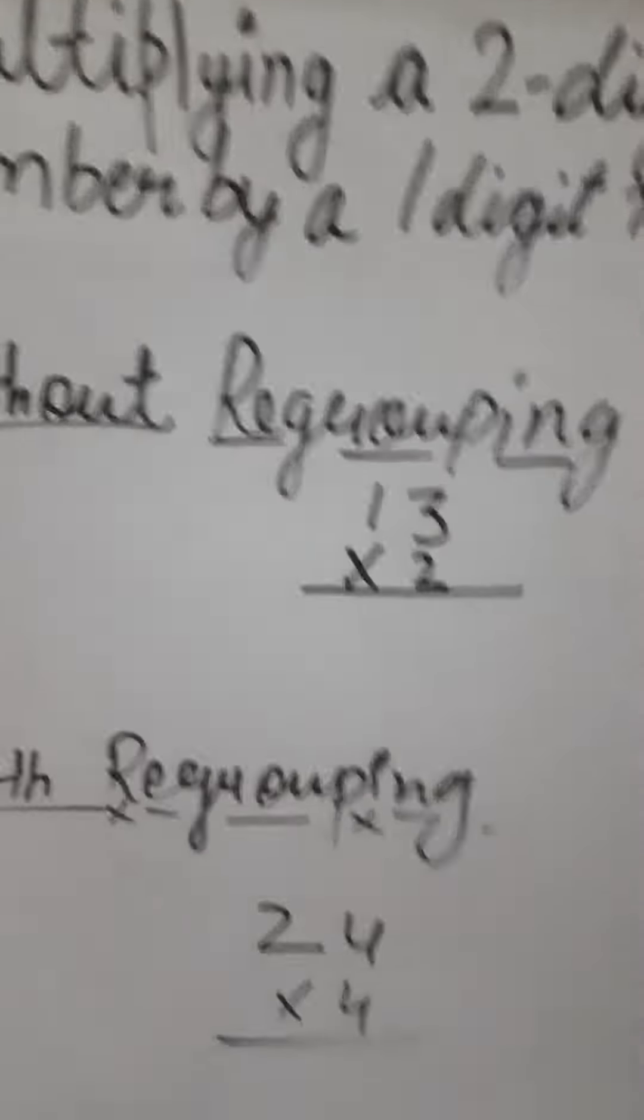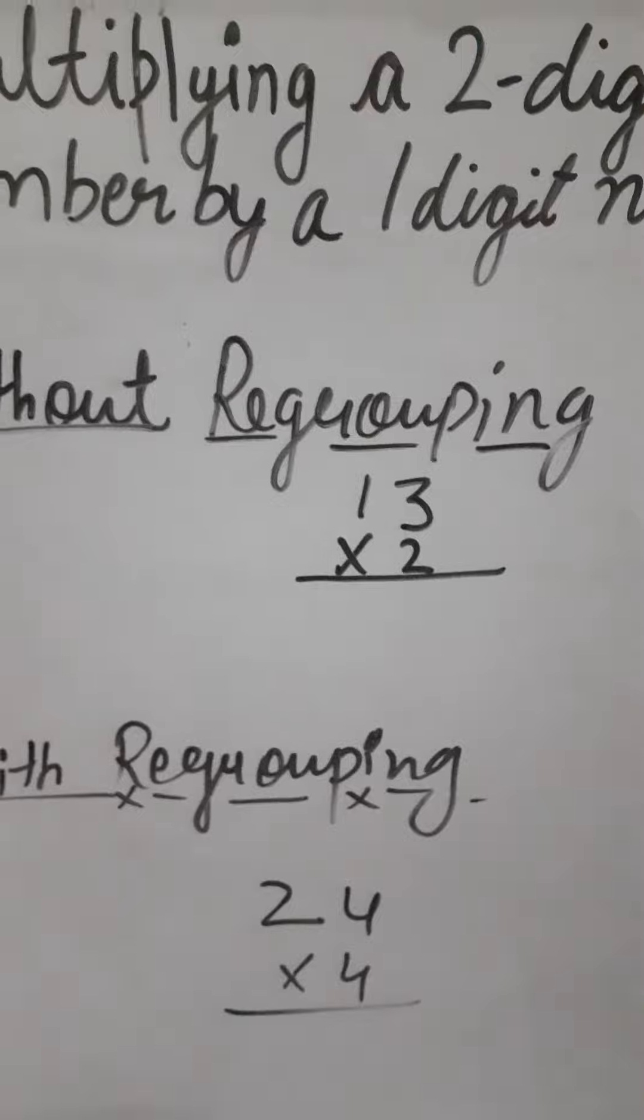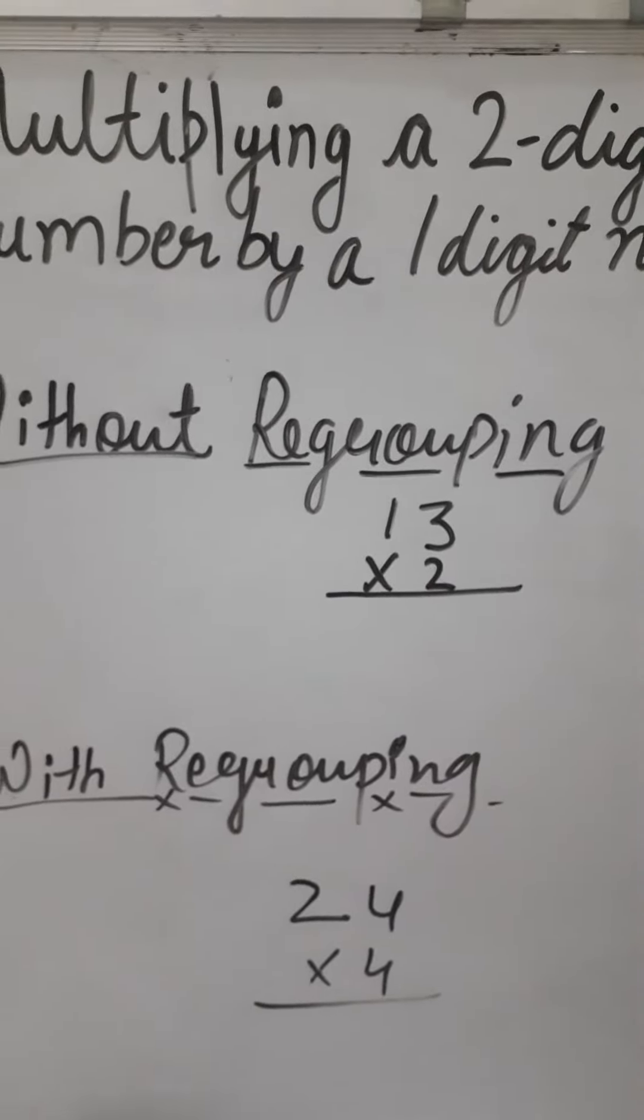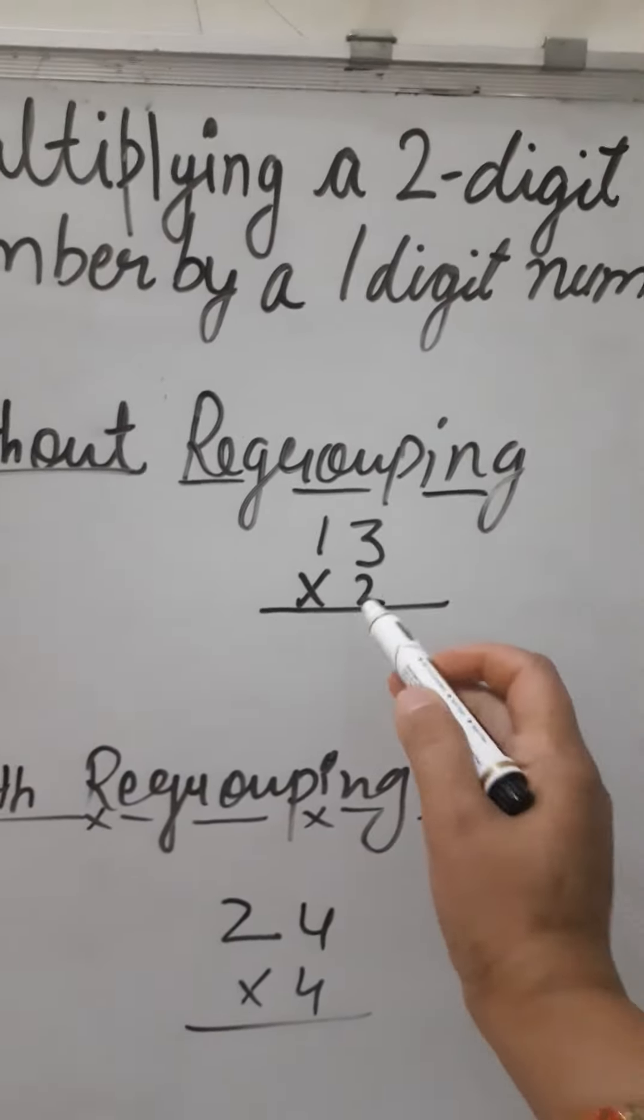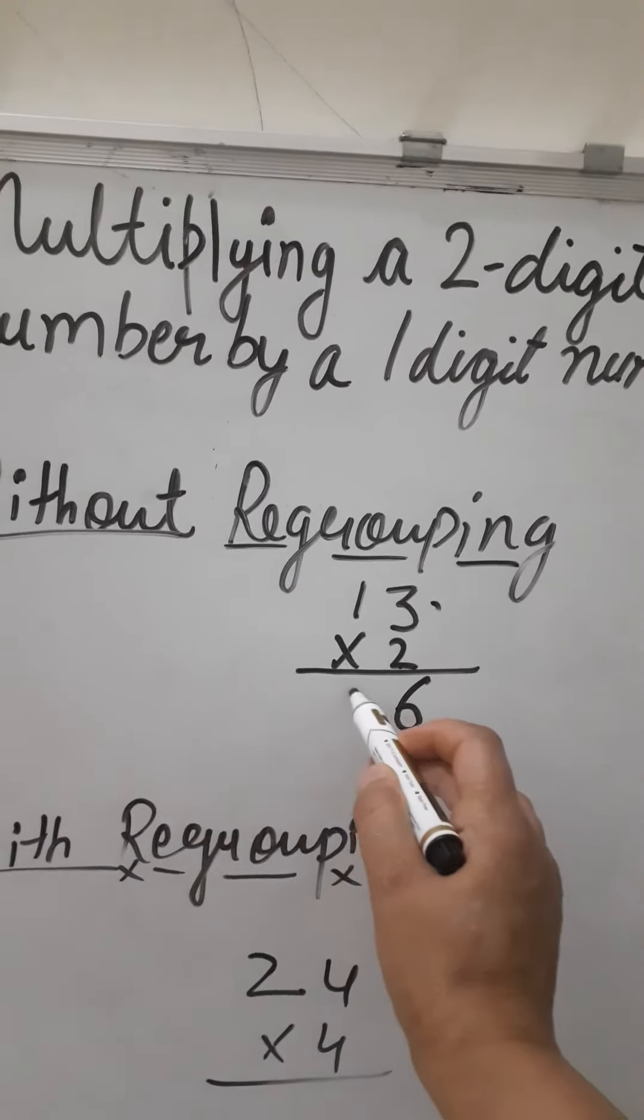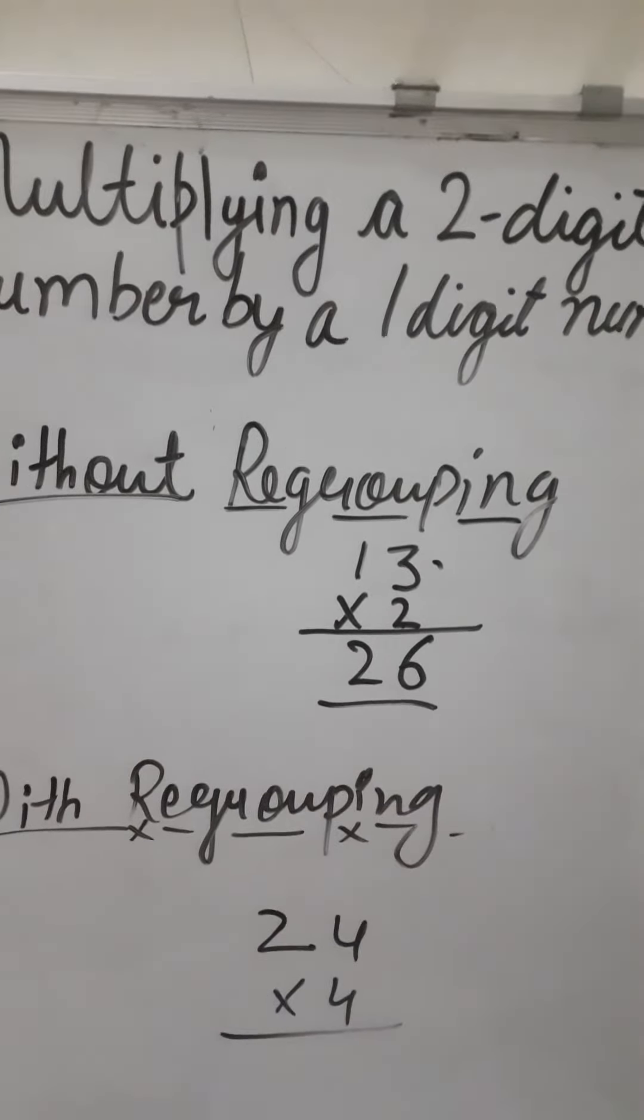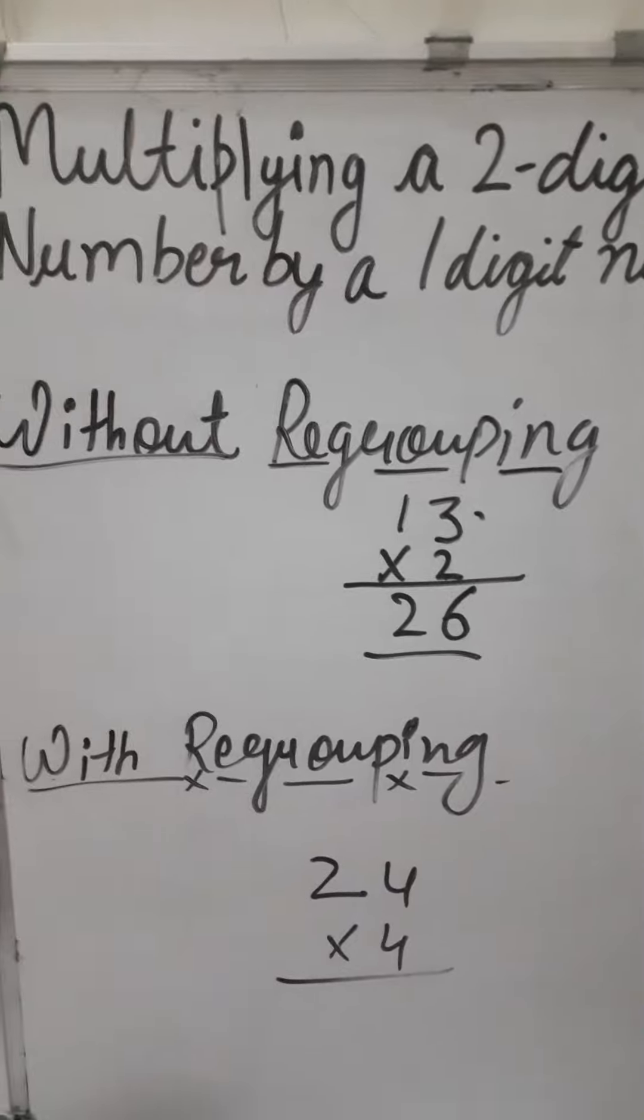So let's take one example of each. So here look everyone we are having without regrouping first. First when we multiply this 2 by 3, 2 threes are 6 and 2 ones are 2. So 26 and there is no need to take a carry.